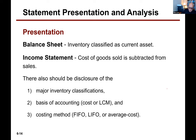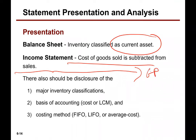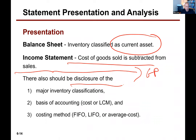Inventory is a current asset. Cost of goods sold is subtracted from sales to give us gross profit. And there would be disclosures: every set of financial statements has a disclosure called significant accounting policies, and in that, the entity would show whether they're using LIFO, FIFO, weighted average, et cetera.